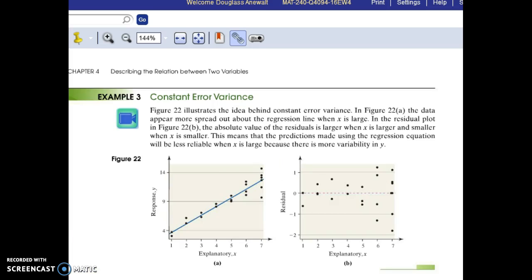Page 226 shows something else to look out for, which is called constant error variance. If your residual plot has a lot bigger spread on one end, so here as X gets larger, the residuals are a lot more spread out than when they're smaller, then again, a linear model may not be appropriate.